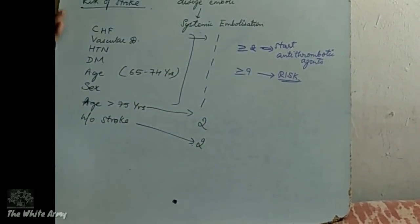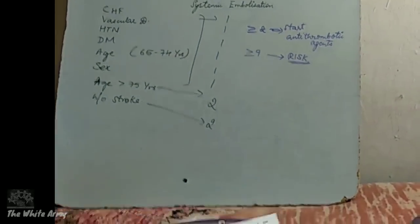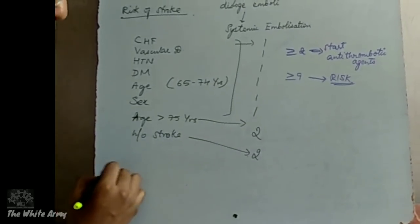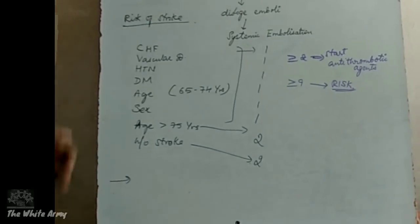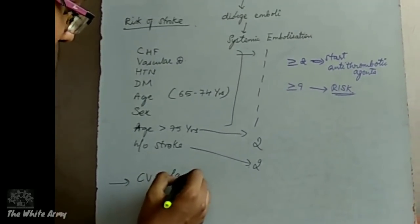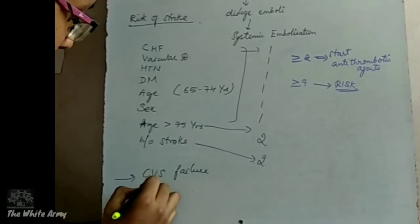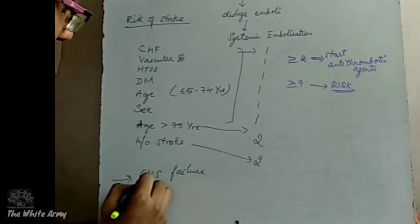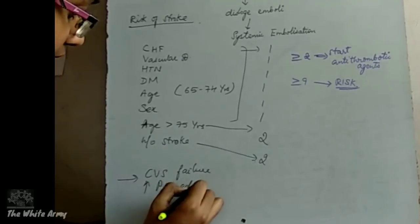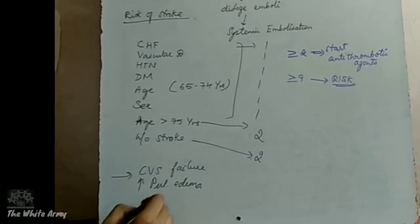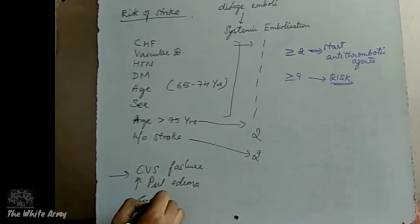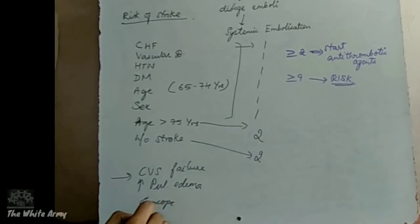Other complications of atrial fibrillation include cardiac failure, pulmonary embolism, syncope, and hypotension.